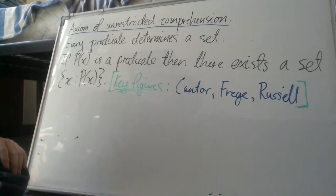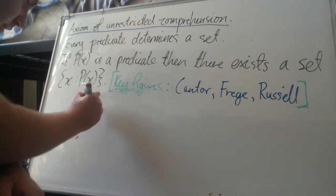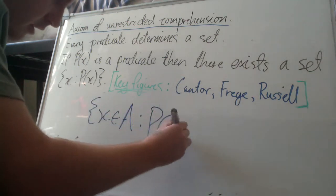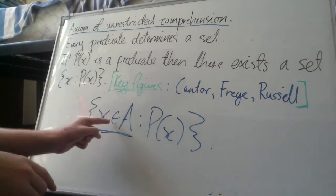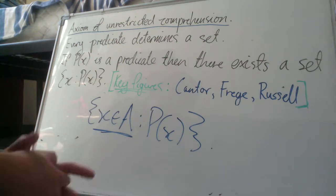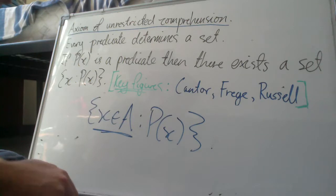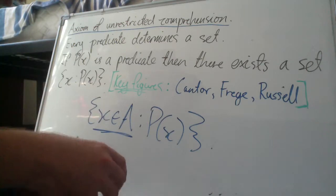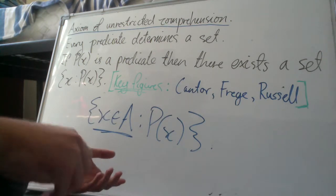The axiom of restricted comprehension just states that there must be some implicit set that x is already an element of. So essentially what that means is that we can only create new sets via predicates when they are subsets of previously constructed sets. So that's pretty cool. Hope you enjoyed it.